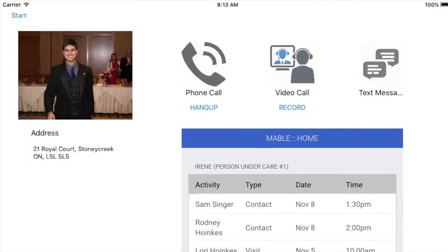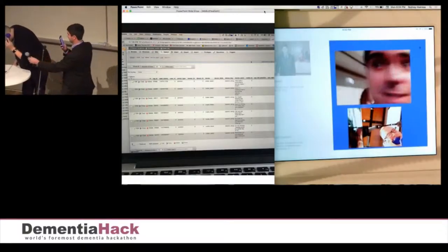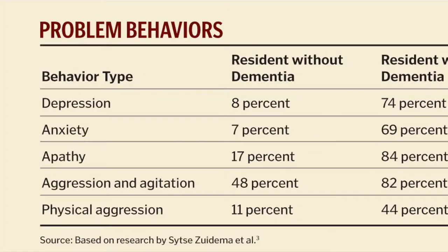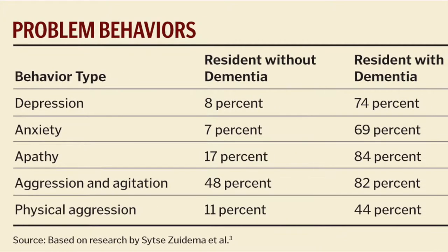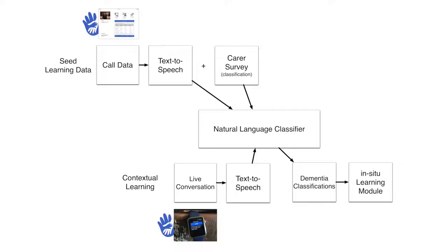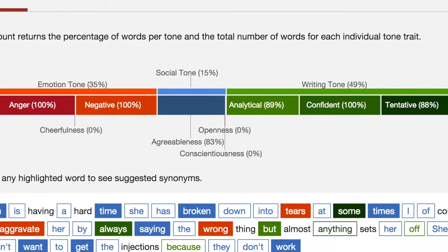The natural language classifier is built using data gathered in regular communications occurring through the core Mable system, combining speech recognition with carer end-of-call surveys as seed-structured classifications.